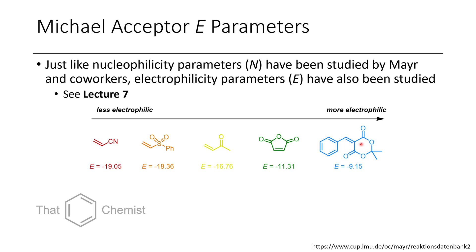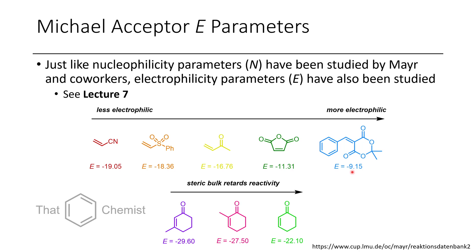If we have a derivative of Meldrum's acid, this is an even better electrophile — so more nucleophiles could add to this. Another factor that can influence how electrophilic a Michael acceptor is, is whether or not there's steric bulk on the alpha or beta carbon. Here you can see cyclohexenone has an E of minus 22. If we have a methyl group in the alpha position, that blocks some nucleophile addition and retards the addition rate by about five orders of magnitude. It's even more significantly impacted if you have a methyl group on the beta carbon where the nucleophile would add — so very few nucleophiles would add to that compared to cyclohexenone.